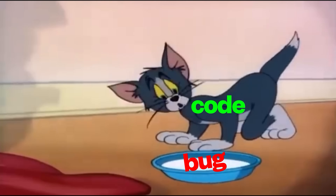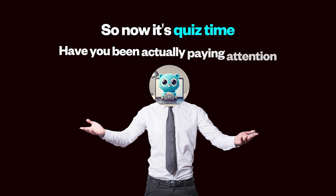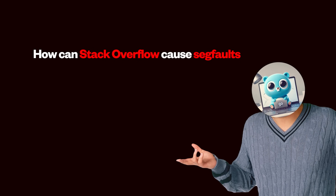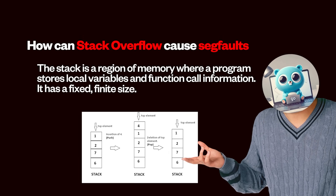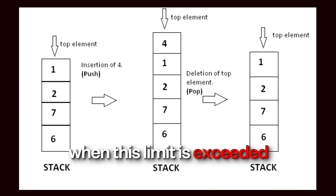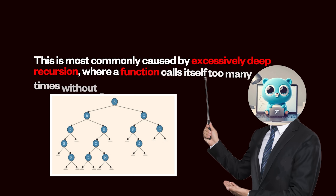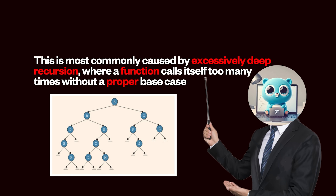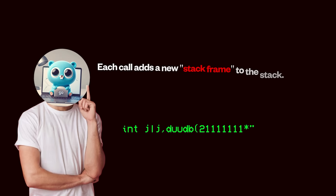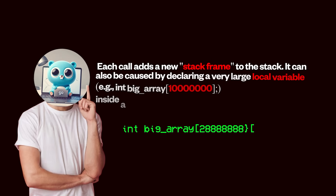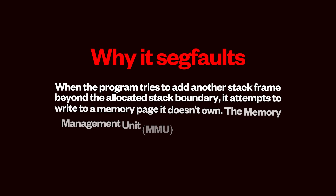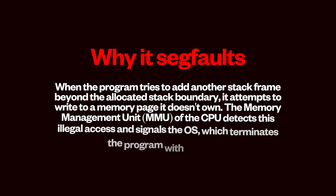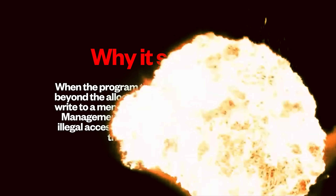A single unchecked data conversion from 64-bit float to 16-bit int brought down one of the most ambitious space missions in history. And that kind of bug could be sitting in your code right now. So now is quiz time. How can a stack overflow cause segfaults? The stack has a fixed finite size, and a stack overflow happens when this limit is exceeded — most commonly by excessively deep recursion where a function calls itself too many times without a proper base case, or by declaring a very large local variable inside a function. When the program tries to add another stack frame beyond the allocated stack boundary, it attempts to write to a memory page it doesn't own. The memory management unit of the CPU detects this illegal access and signals the OS, which terminates the program with a segfault.